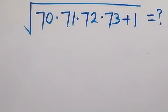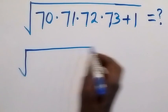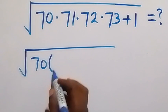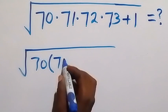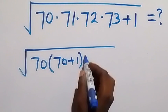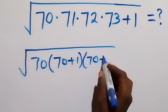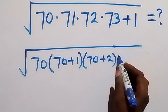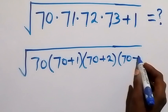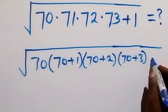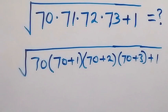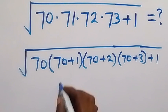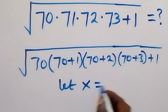Hello, you are welcome. Here we want to simplify this algebra equation. We can write this as the square root of 70 times 71, where 71 can be written as 70 plus 1, then multiplied by 70 plus 2, then also multiplied by 70 plus 3, then plus 1. Now let x be equal to 70.